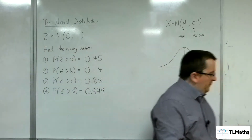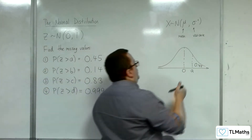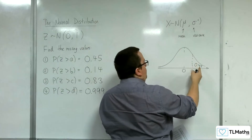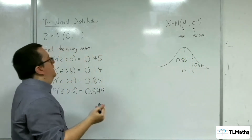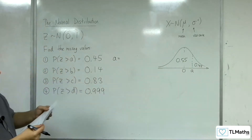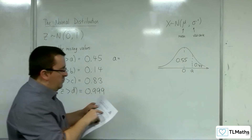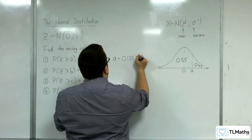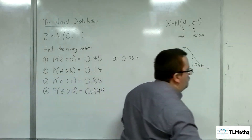From the tables, I can only look up probabilities to the left. So you need to recognise that if the right side is 0.45, then the left side has to be 0.55. So the value of a, when I look up 0.55, is 0.1257. You always need to look at it that way round.